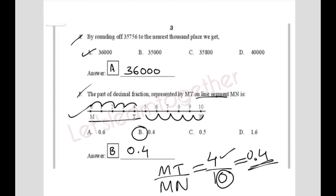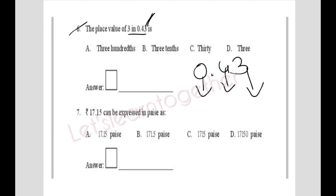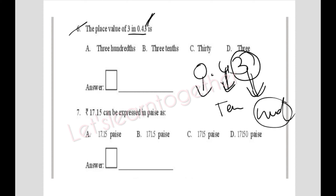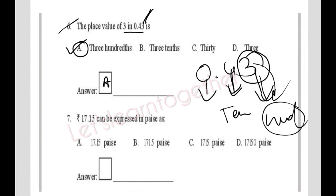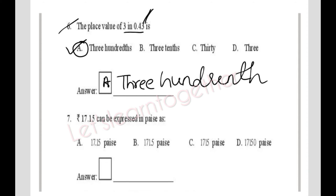Question 6: What is the place value of 3 in 0.43? After the decimal point, the first digit is the tenths place and the second digit is the hundredths place. So 3 is in the hundredths place, making its place value 3/100. The answer is option A: 3/100.